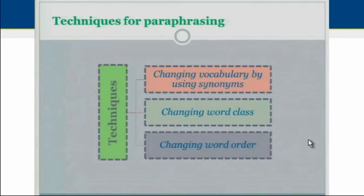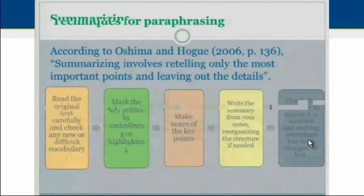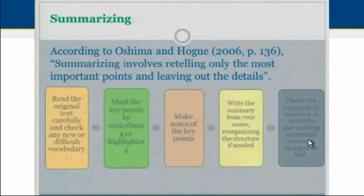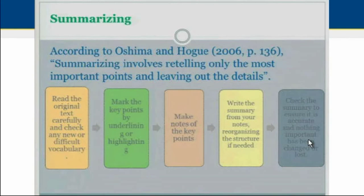These techniques will help a lot when writing paraphrases. In the case of a summary, it involves retelling only the most important points and leaving out the details. The steps to follow in order to write good summaries are: read the original text carefully and check any new or difficult vocabulary; mark the key points by underlining or highlighting; make notes of the key points; write the summary from your notes, reorganizing the structure if needed; and finally, check the summary to ensure it is accurate and nothing important has been changed or lost.